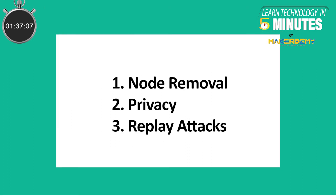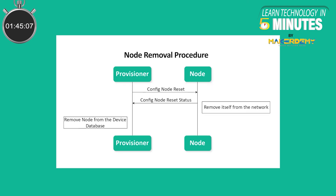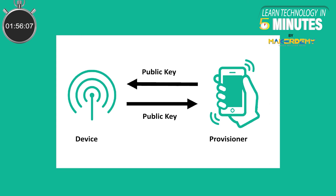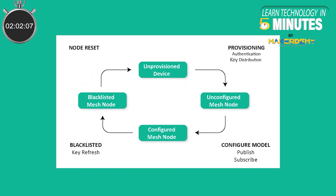Now let's look at some security concerns in BLE Mesh. Node removal, privacy, and replay attacks are of concern in BLE Mesh. First, let's look at node removal. One major concern with the mesh network is gaining access to a network via a discarded or removed device that used to be part of the network. This can be accomplished via gaining physical access to the keys stored within the device. In order to protect against such an attack, BLE Mesh defines a procedure for removal of a node where the device is added to a blacklist and the keys are refreshed. This process distributes new network keys, application keys, and other relevant data to all nodes, except those in the blacklist.